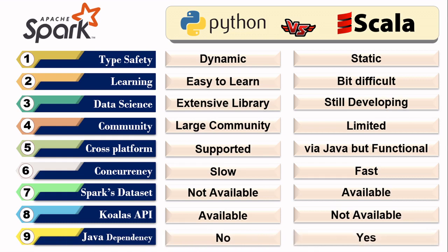Regarding Java dependency, Python has no dependency on Java, but Scala must wrap up with Java JDKs. If there is no Java, Scala won't be able to extend.